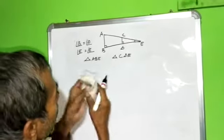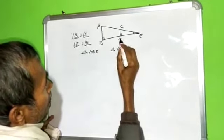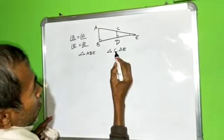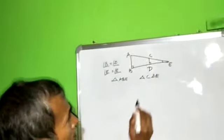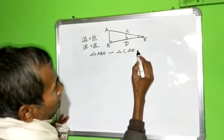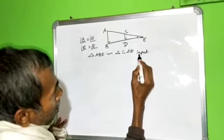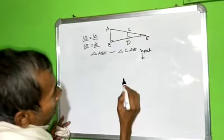This is D, CDE. These two triangles are similar. Now this is input, this is input for second theorem. Geometry Theorem.